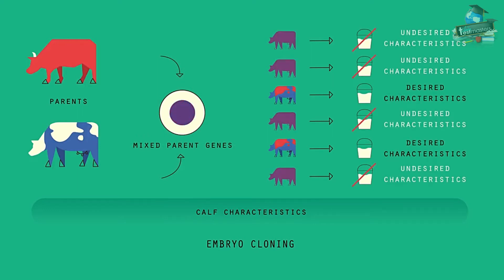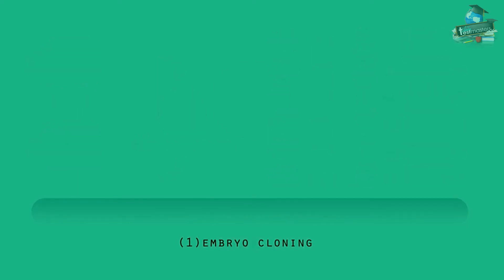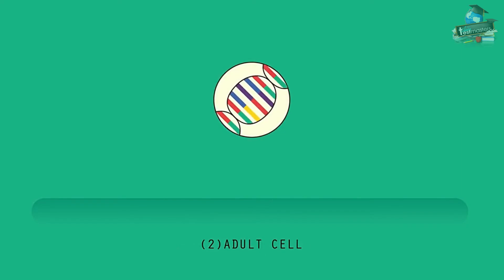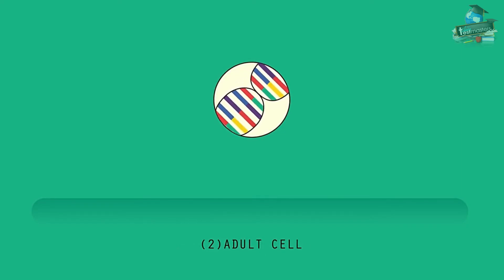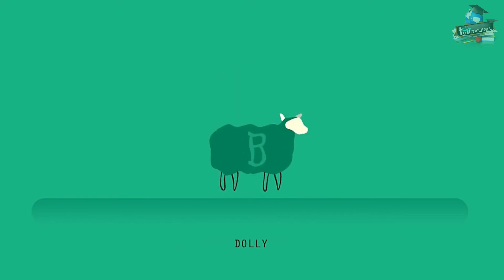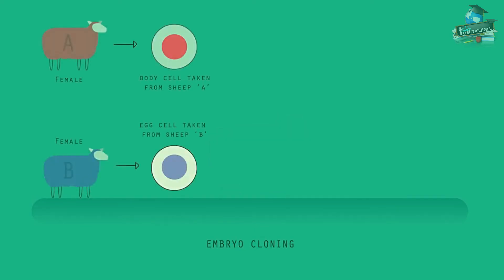There is a way to get around that problem, and that is to use another technique called adult cell cloning. This is used to form a clone of an adult animal. You might have heard of Dolly the sheep — she was the first mammal to be cloned, back in 1996. There are several steps to this process.